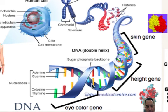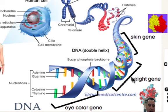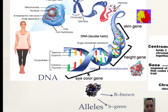Looking a little more into the DNA, there are sections called genes. Each gene will make a protein. Here we have the skin gene, the height gene, and the eye color gene. A gene is a section of DNA that has instructions to make a protein — the height gene makes a height protein, and the skin gene makes skin proteins.